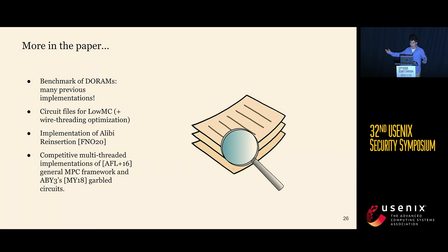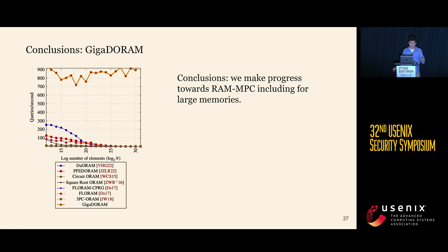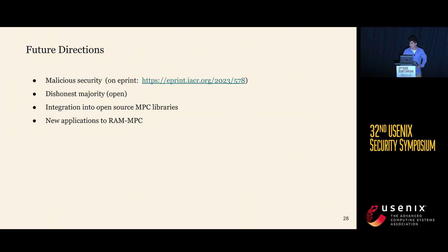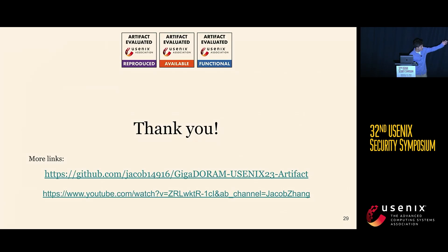There's more in the paper: we benchmark many Dorams, provide circuit files for LowMC — a popular pseudorandom function for MPC — give the first implementation of alibi reinsertion to the best of our knowledge, and provide competitive multi-threaded implementations of MPC frameworks used internally. To conclude, Giga-Doram makes progress toward building RAM MPC for large memories. Future directions include malicious security, dishonest majority settings — currently open beyond the 3-party semi-honest setting we present — as well as integrations into open source MPC libraries and applications for RAM MPC.